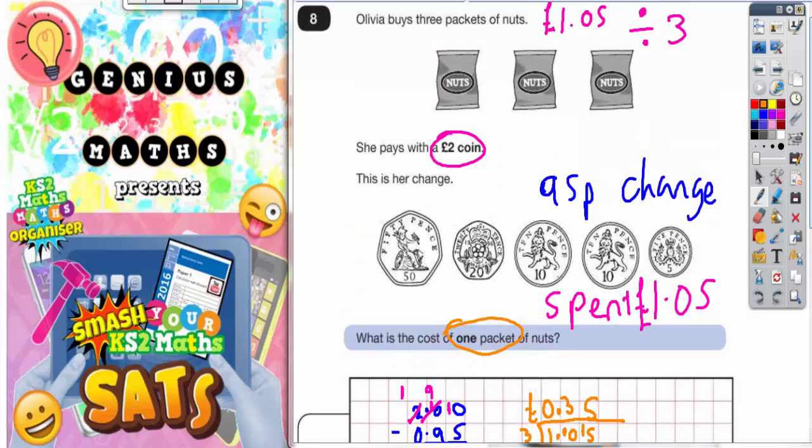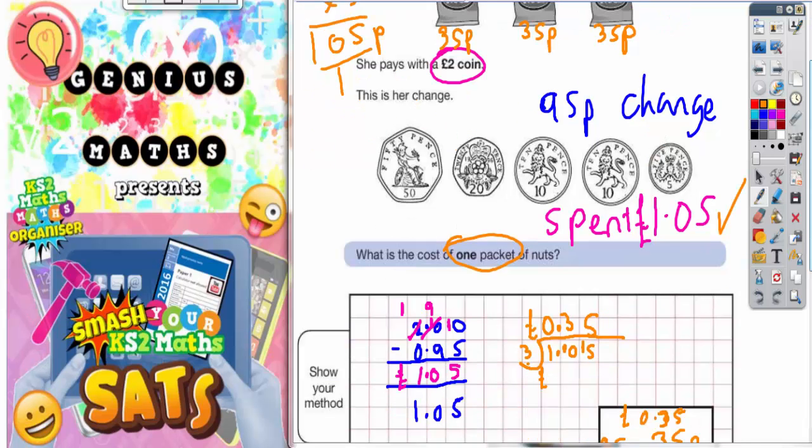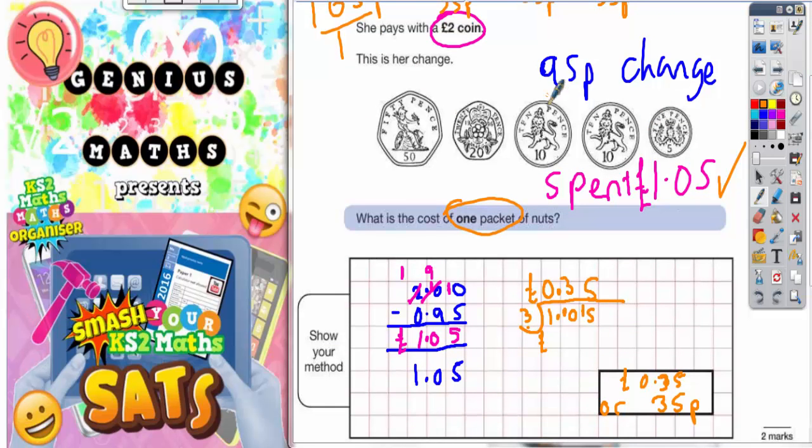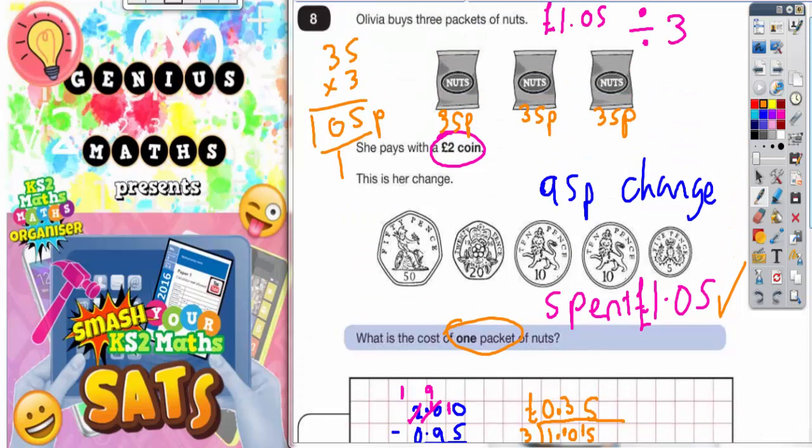As a double check, you could go back to the start and write 35p on all the bags of nuts. If you multiply 35 times three, see what that gives us as a check. Three fives is 15, put five and carry the one. Three threes are nine plus the one is ten. That's 105p. Remember, 105p is the same as one pound five. If you spend one pound five, you would get 95p change from a two pound coin. So it all works out. And that's the answer finished.